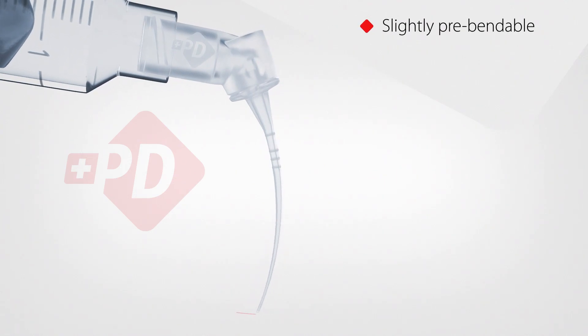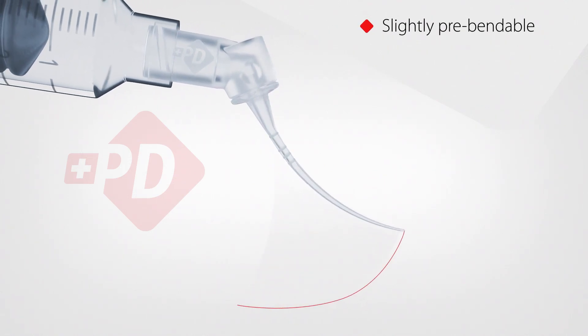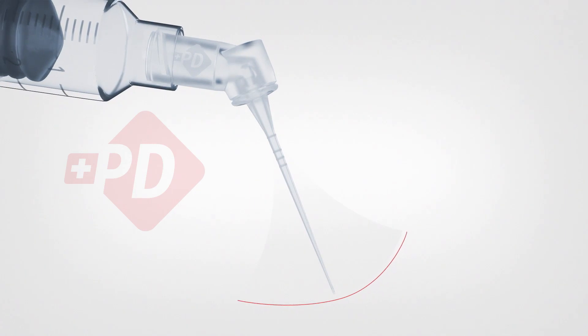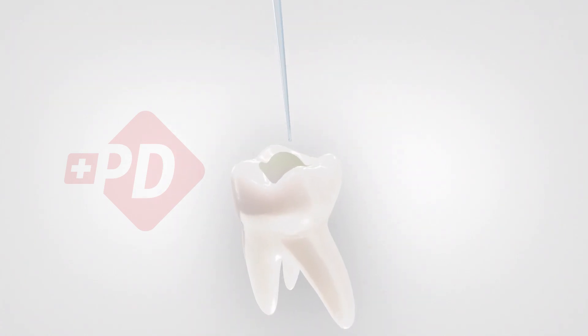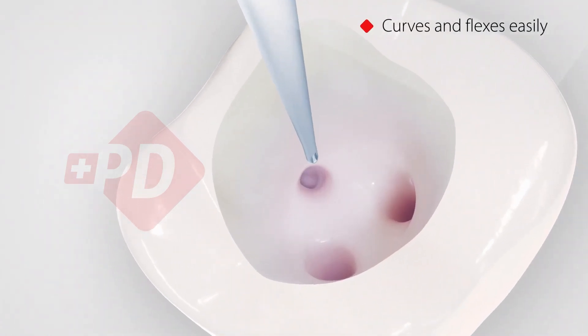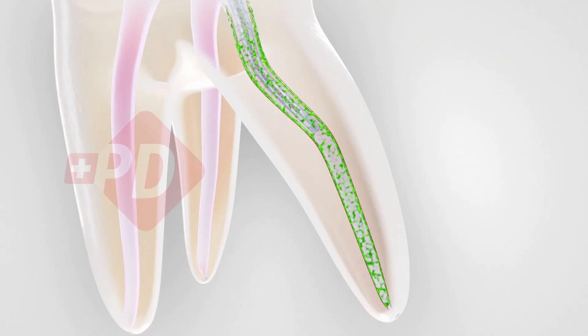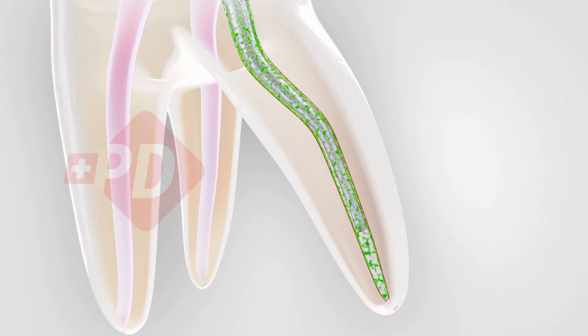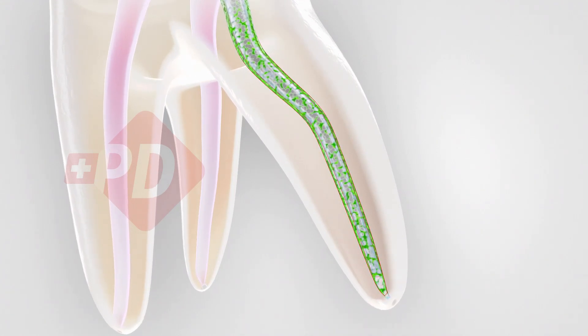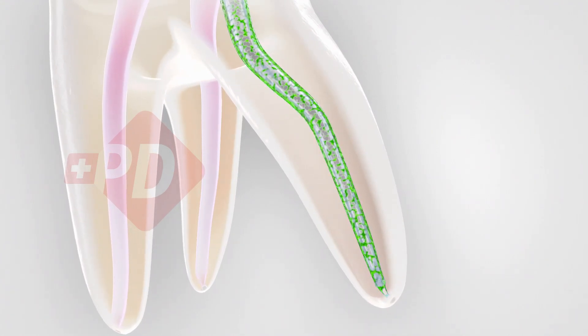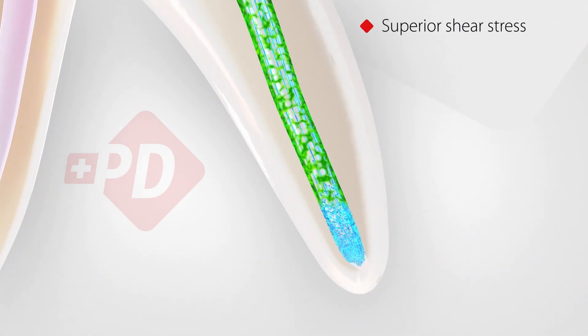If necessary, AIRIFLEX can be slightly pre-bent before insertion. The soft polypropylene body makes the needle curve and flex easily in the most complex root canal anatomy without being traumatic for dentin. The 4% tapered shape matches root canal preparation.